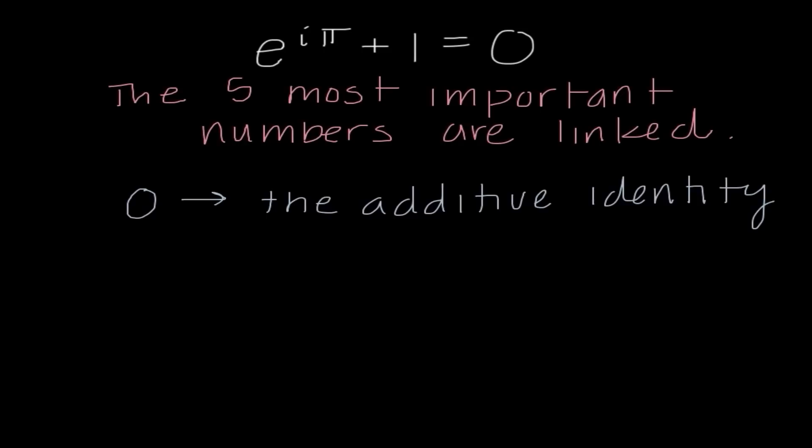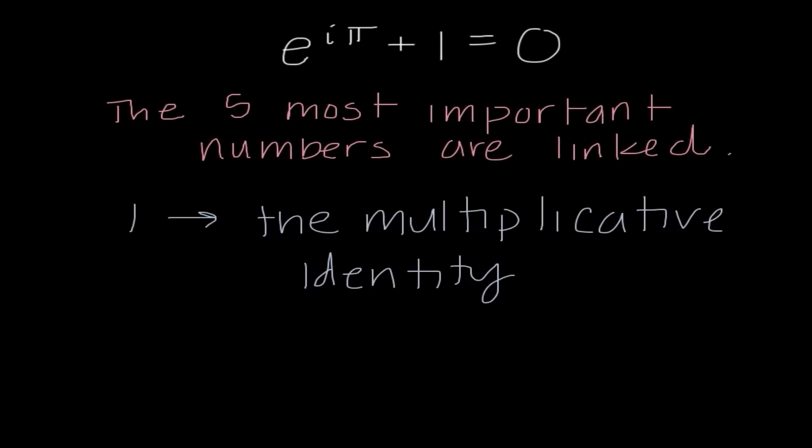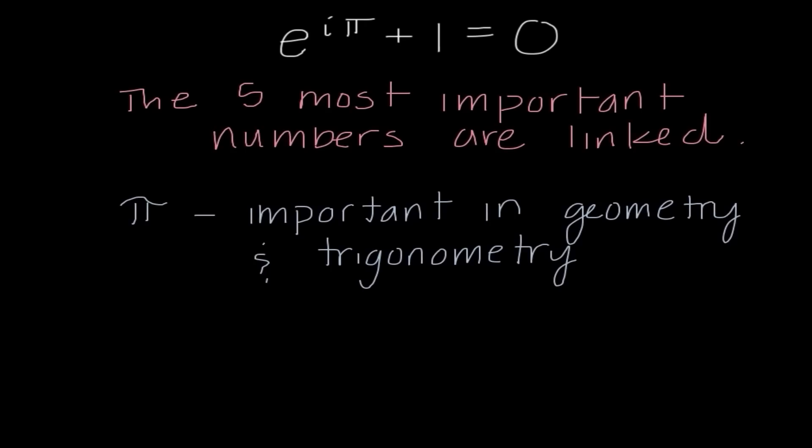Firstly, zero is the additive identity. We learned about that all the way back in chapter one. One is our multiplicative identity. So that's what makes those two constants extremely important, is those are both of our identities. Pi is a value that is extremely important in both geometry and trigonometry. And it would be kind of impossible for us to do a lot of that work without having those two values.